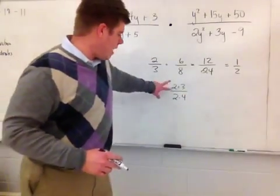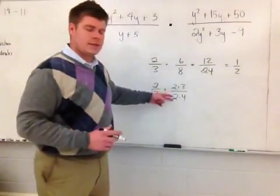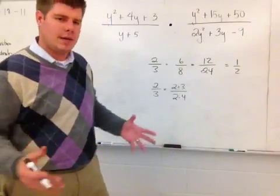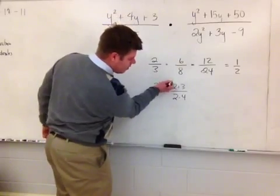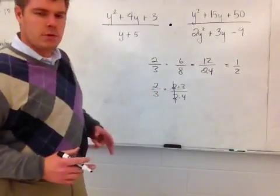2 just so happens to be a common factor because 2 goes into both. So now that this 2 gets taken out, it's really taking out a redundancy of a multiplication. And that multiplication is of 1 here because 2 divided by 2 is 1. So what I've now got is 2 thirds times 3 fourths.